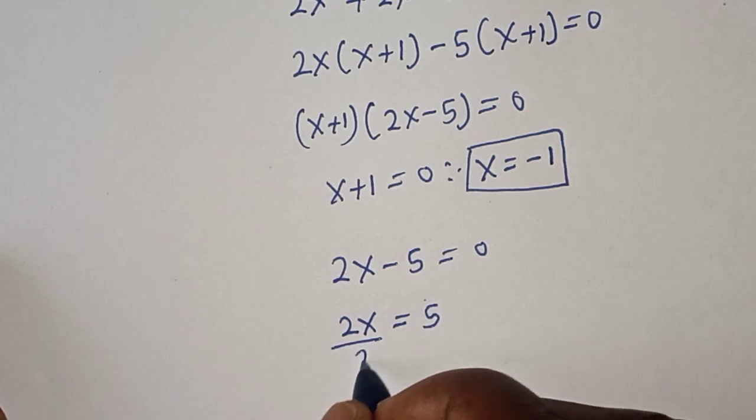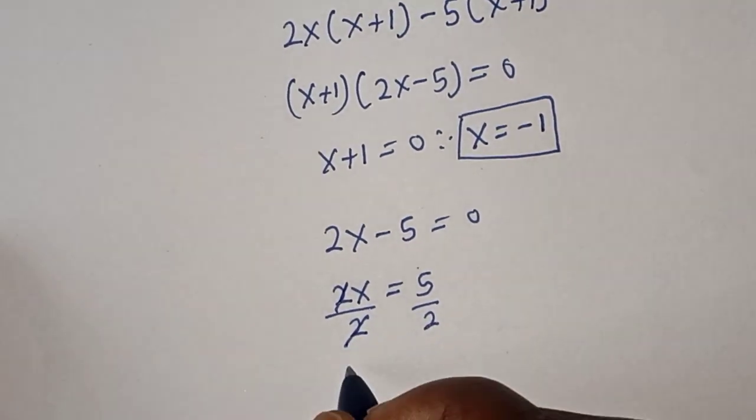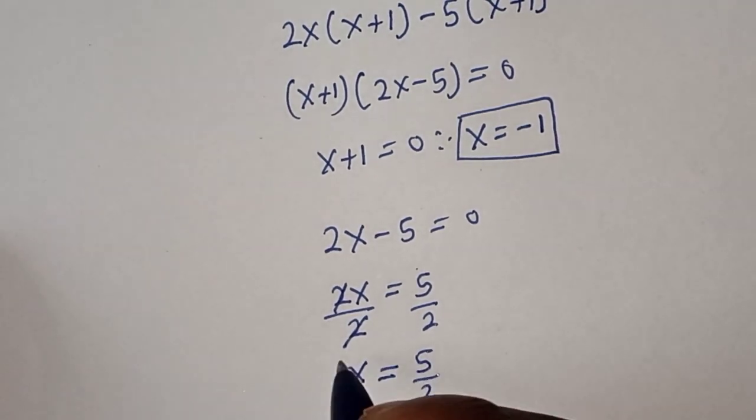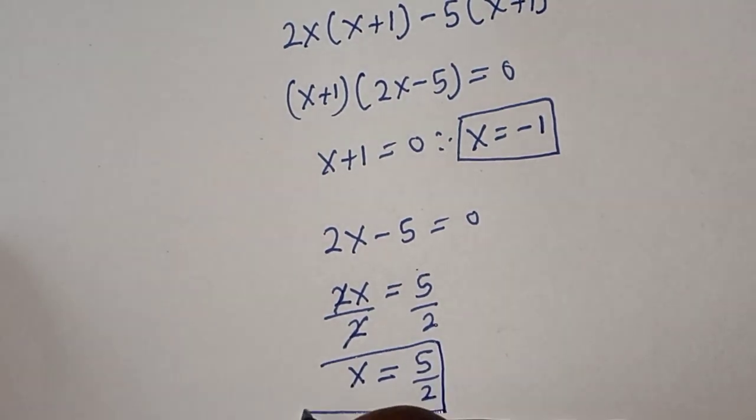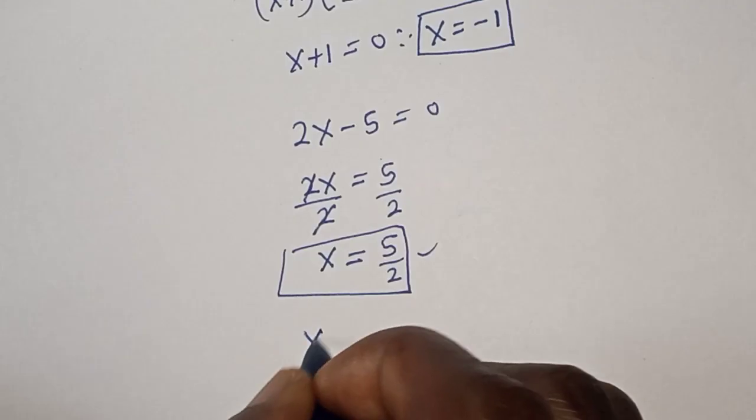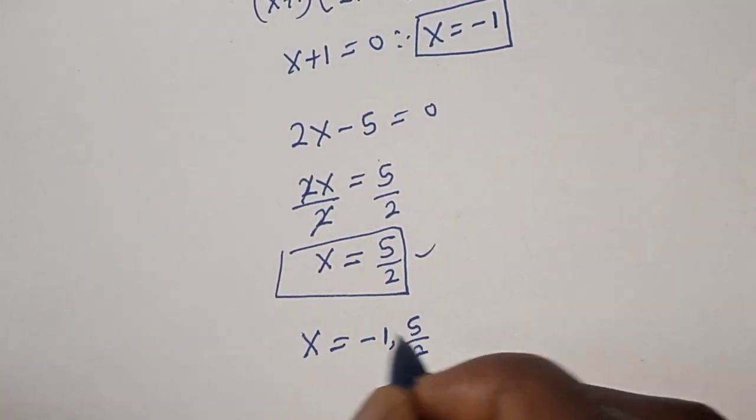Let's divide both sides by 2. This will cancel, giving x = 5/2, the second value of x. So our final answers are x = -1 and x = 5/2.